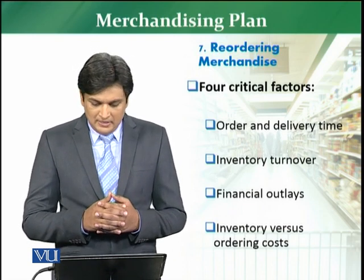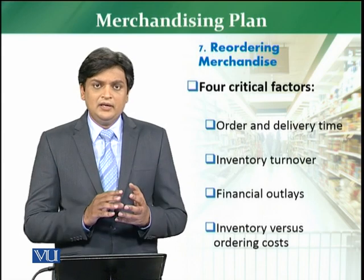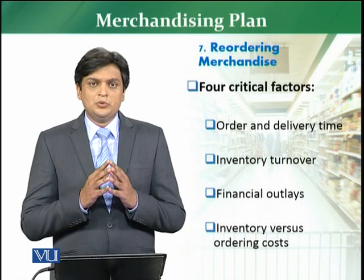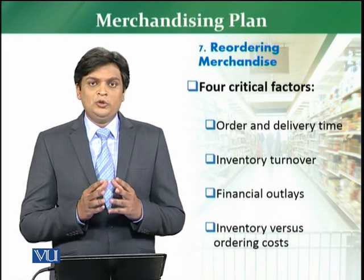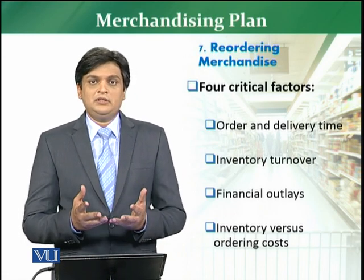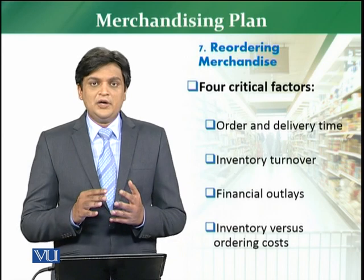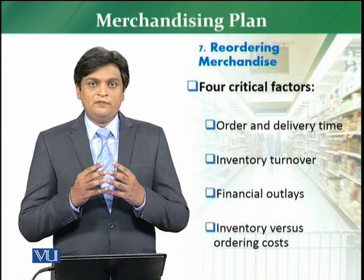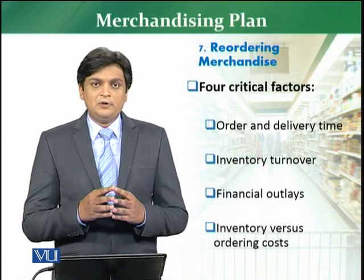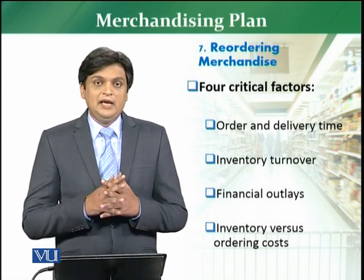The second critical point is about inventory turnover — how fast the goods can be turned over and how much rotation of goods occurs in the store. For bakery items, the inventory turnover of such products is normally less. On the basis of product turnover and rotation of goods, it is decided what the ordering level will be, at what quantity you will order, and when you are going to order.